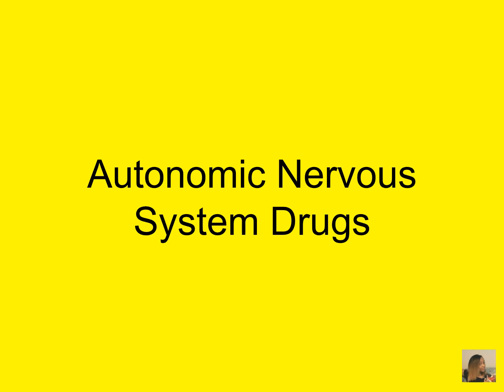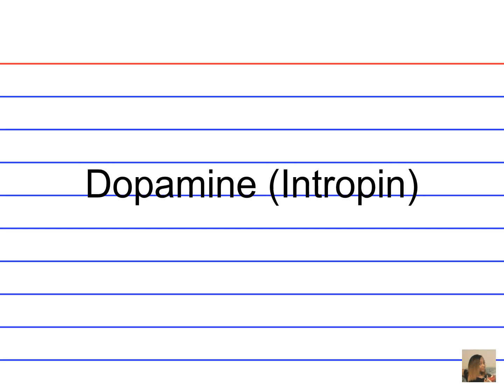Autonomic nervous system drug: Dopamine (Intropin). What is the drug classification for dopamine? Dopamine is a beta-1 agonist. What is the mode of action of dopamine? Dopamine activates beta-1 receptors. What are the indications for administering dopamine? It's a critical care drug for heart attack, heart failure, and shock. What are the general side effects of dopamine? It has powerful effects on the heart.